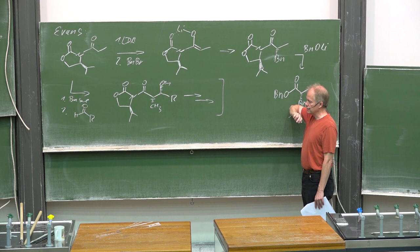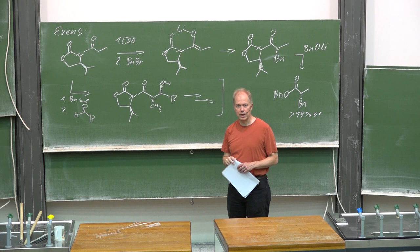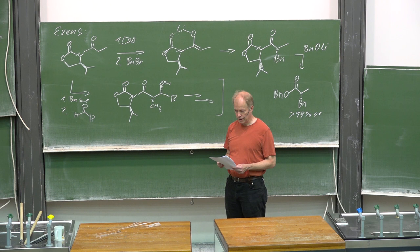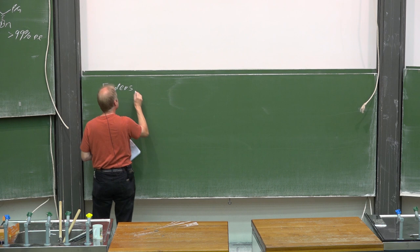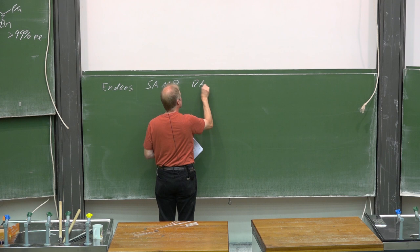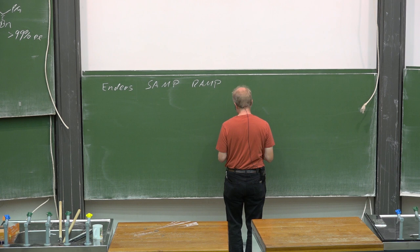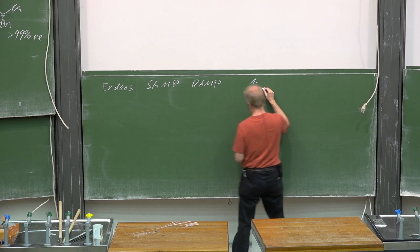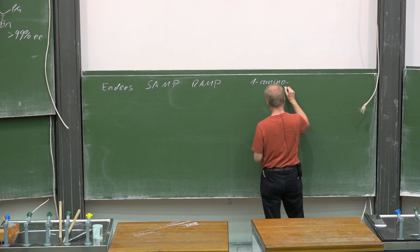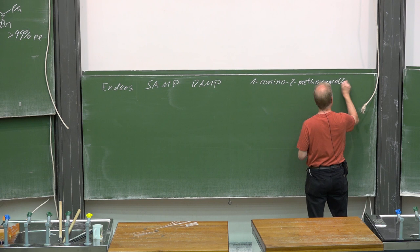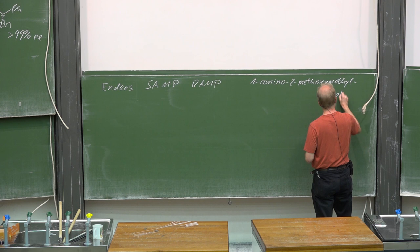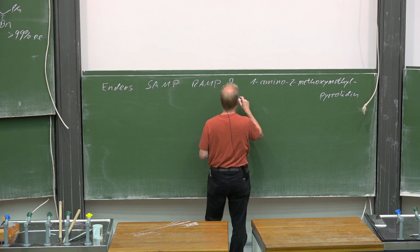There is an alternative approach developed by Dieter Enders at Aachen University. The abbreviation SAMP and RAMP is well known for these cases. It's about amino methoxymethyl pyrrolidine, and there you have either the R or the S enantiomer.